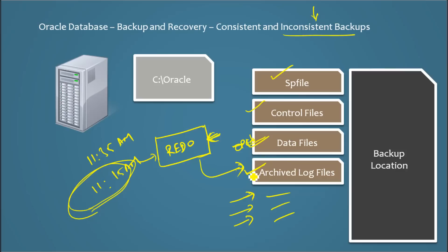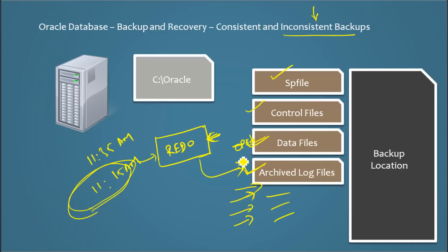Archive log files are needed for this reason. When backing up a system where things are constantly happening, you need to keep a note of what's changing, and the archive log files serve that purpose — they keep a record of what is being changed. Those changes get played back so the data files can be brought to a point in time or to a consistent state.